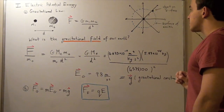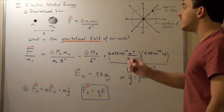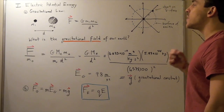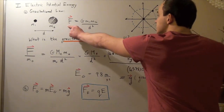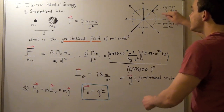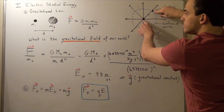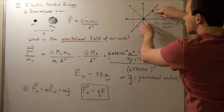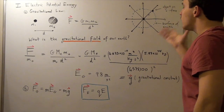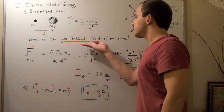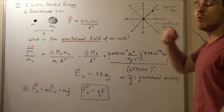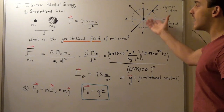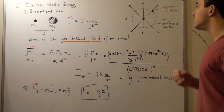If I place an object on the surface of the Earth, that object will experience a force related to the distance separating it from the point mass of the Earth — which is simply the radius of the Earth. To find the gravitational field, I follow the same approach as with point charges: for electric fields, we had the electric field equal to force divided by charge.